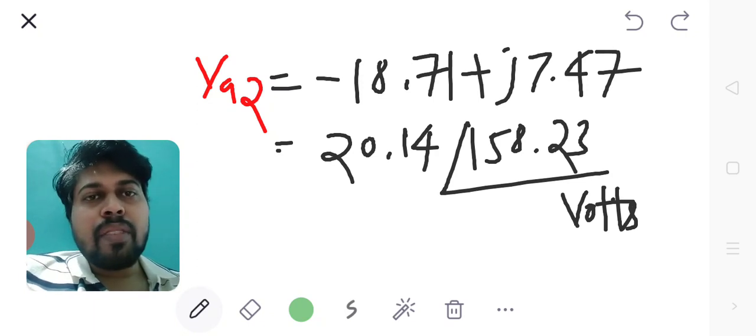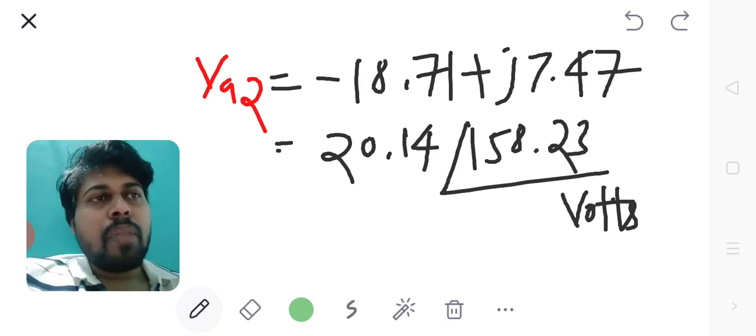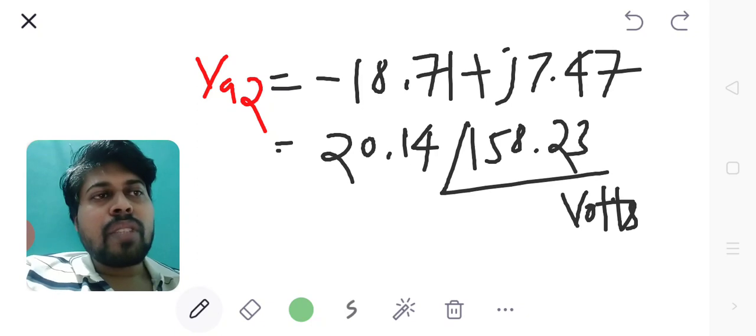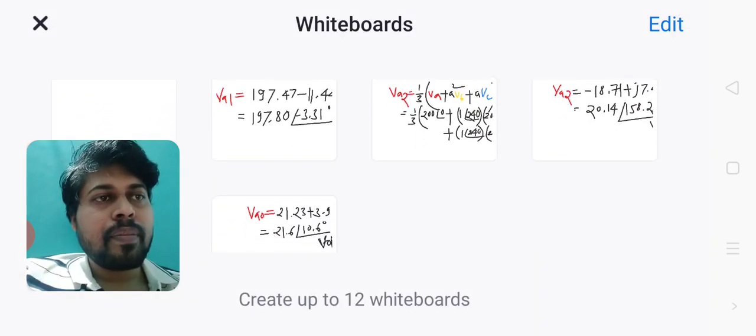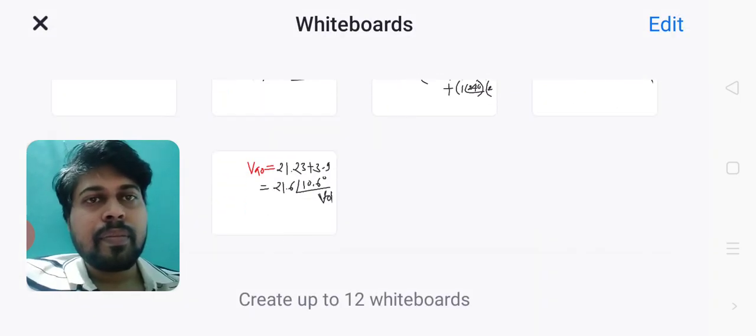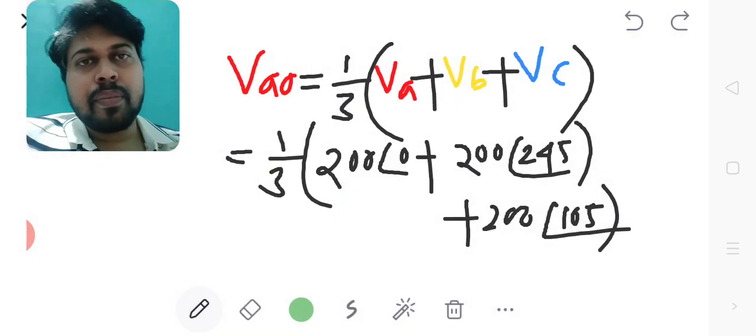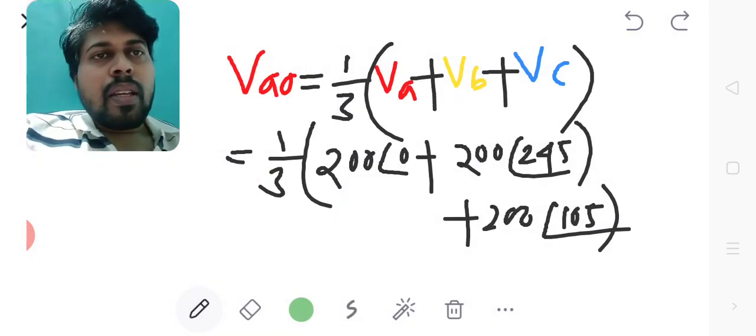VA2 equals minus 18.71 plus 7.47j in rectangular form, which is 20.14 at angle 158.23° volts in polar form.